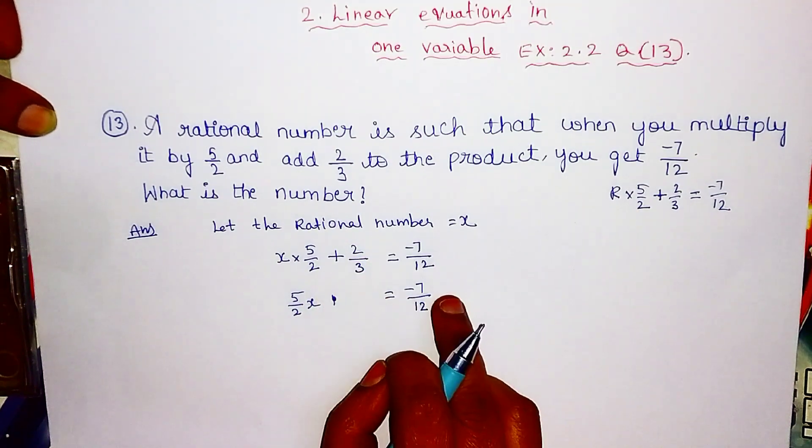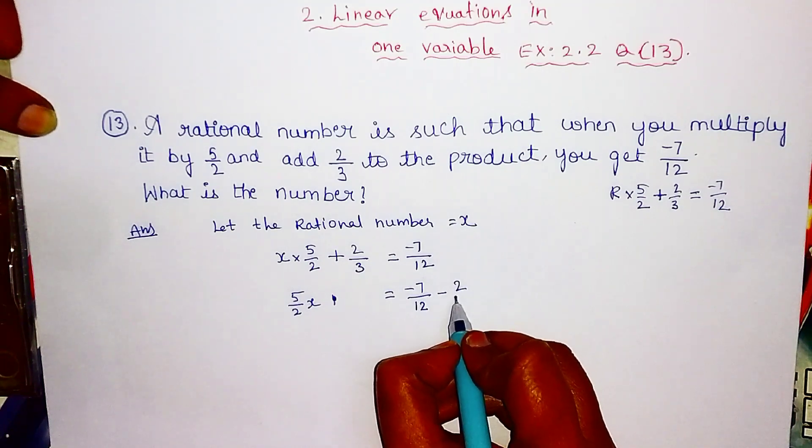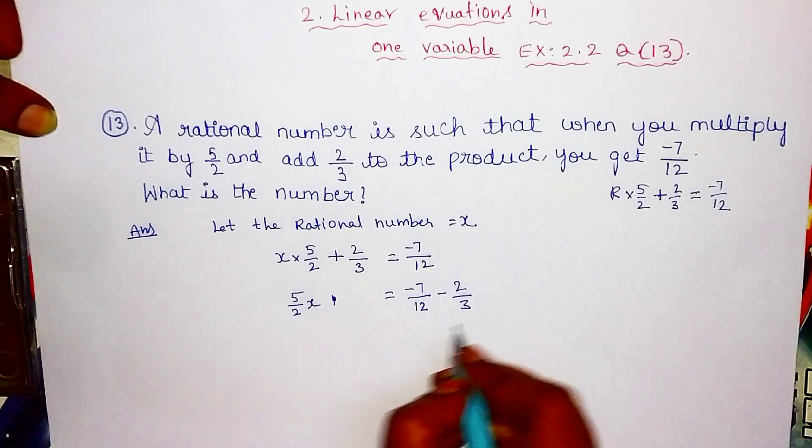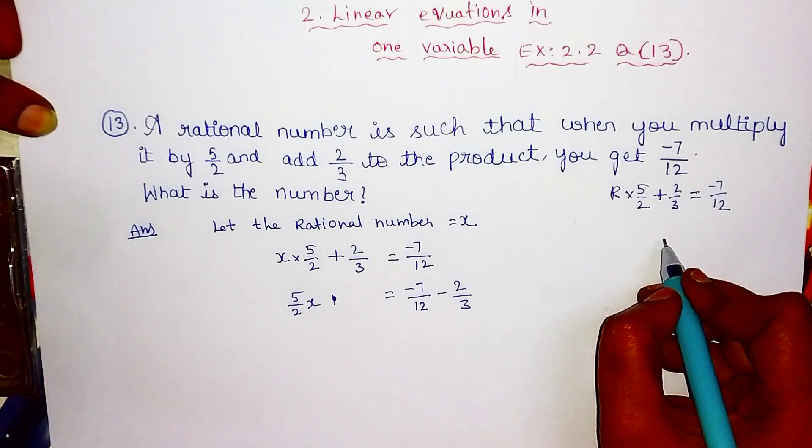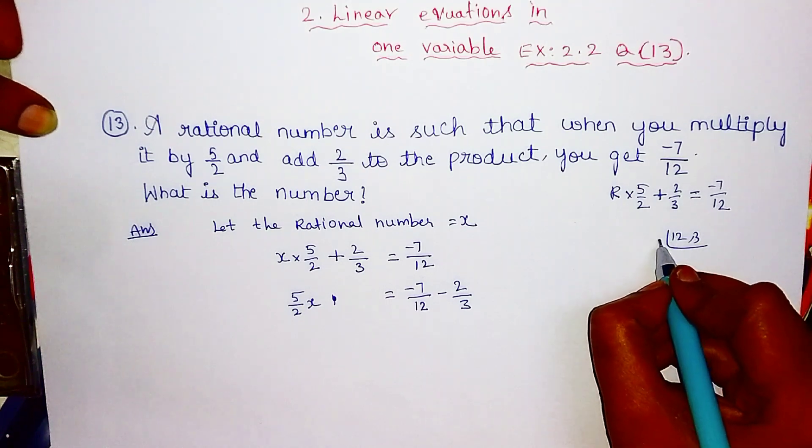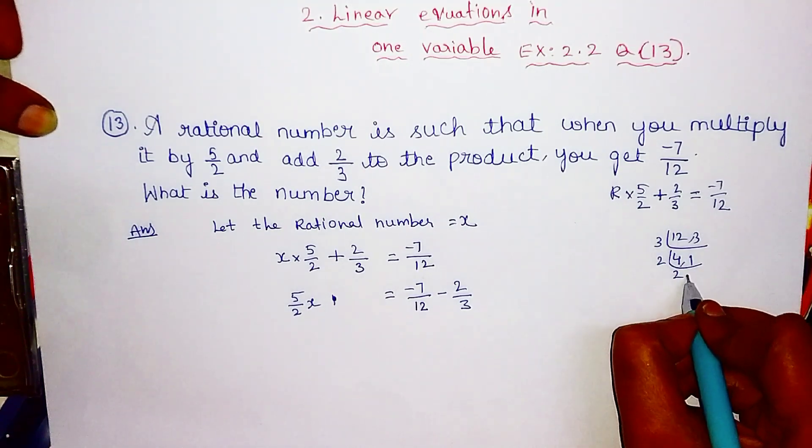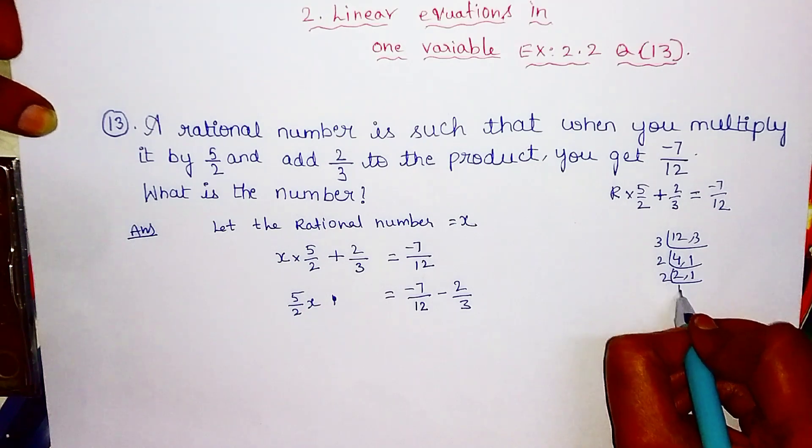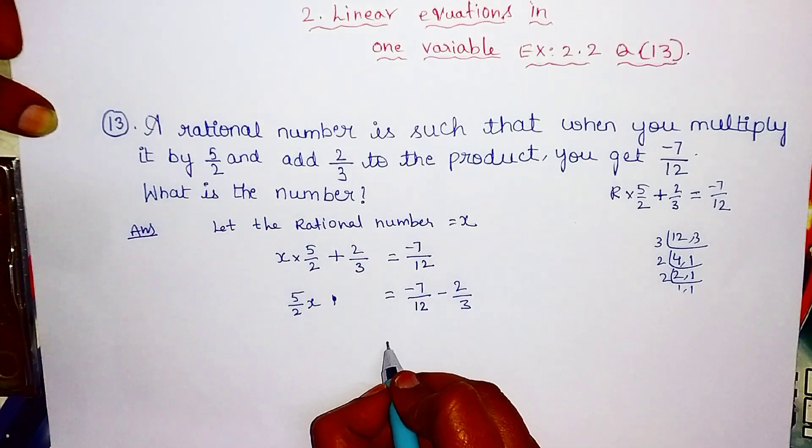Solving the equation, x plus 2 by 3 is equal to minus 7 by 12. Then x is equal to minus 4 by 3.